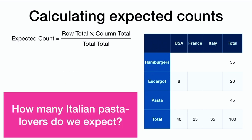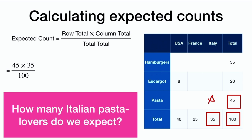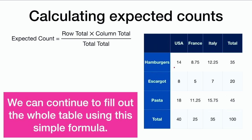How many Italian pasta lovers do we expect if they're independent? We multiply the row total times the column total over the grand total: 45 times 35 over 100, which gives us 15.75. These numbers don't have to be whole numbers — they're just what we're expecting on average. We can continue to fill out the entire interior of the table this way using this simple formula.